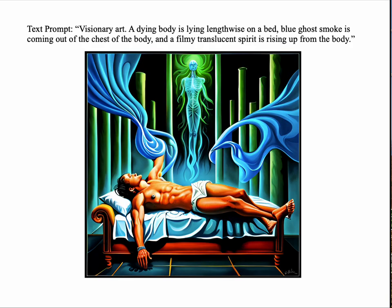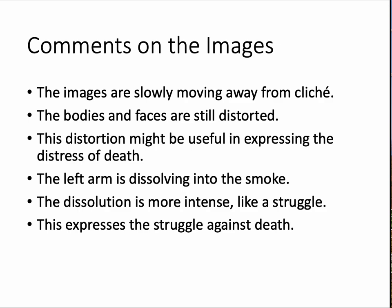Another one — same prompt, more iteration. With Stable Diffusion you iterate through images, selecting images for further generation and variation. The body is a bit distorted. We have a clearer sort of spirit body, an astral body rising behind it. The arm seems to be struggling with the blue smoke, but it's not really smoke anymore — it could be curtains and maybe it doesn't quite look right. These images are moving a little bit away from cliché. Bodies and faces still have distortion, which could be useful in expressing distress. The left arm dissolving could also be useful — it's more intense in some of these images, like a struggle, the struggle against death. Still seems pretty cliché to me.